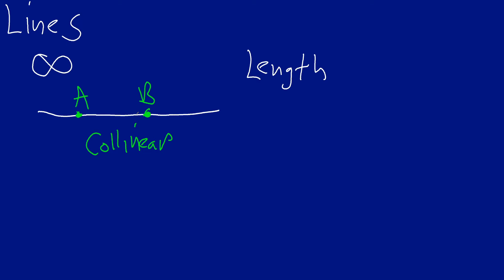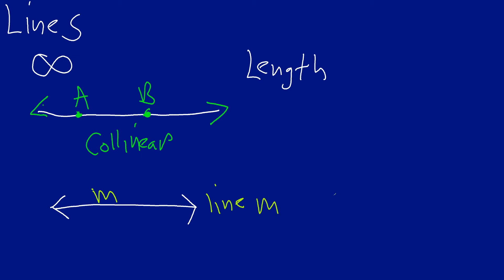It gets more complicated when dealing with lines. When you have arrows on both ends of a line, that is an indication in mathematics that the line goes on forever — it goes on to infinity. You can also give a line a name; for example, if I put a lowercase 'm' next to it with arrows on both ends, this will be called line m.